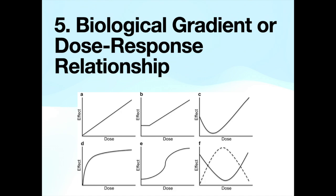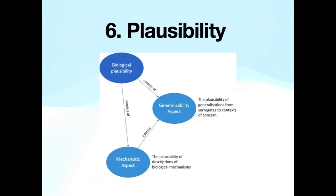Biological gradient or dose-response relationship, meaning that higher levels of exposure are associated with a higher risk of the outcome. Plausibility, as explained by the proposed causal relationship, aligns with current biological knowledge and existing understanding of mechanisms.